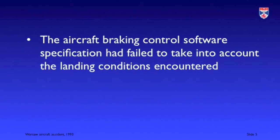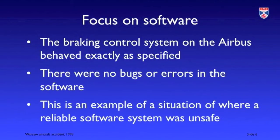Thirdly, the braking system did not deploy because it was under the impression that the aircraft was not on the ground. I'm going to focus on the software element of this accident and the fact that the braking system behaved exactly as it was supposed to. There were no bugs or errors in the software. The problem arose because the system specification did not take into account the particular landing conditions which arose in this case. This is an example of a situation where a reliable software system was unsafe.